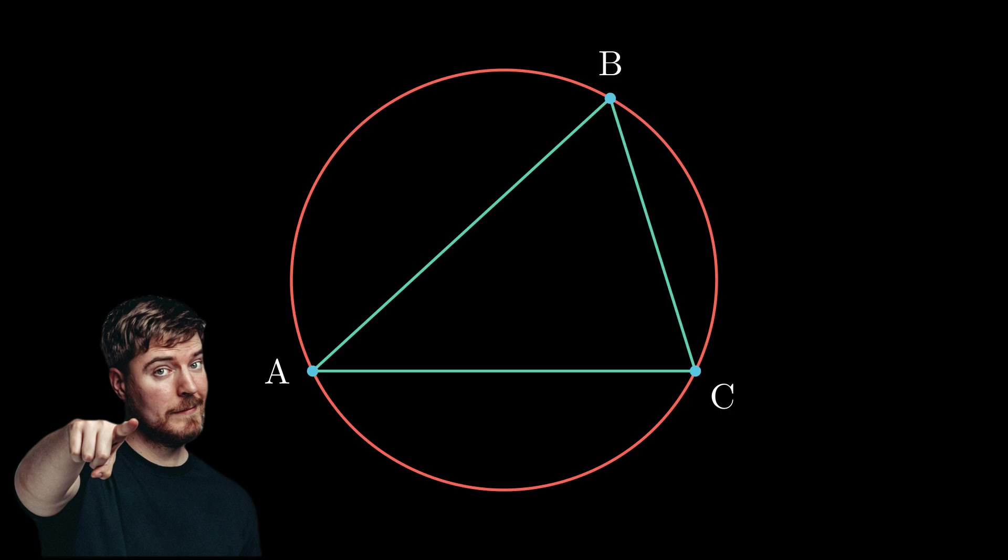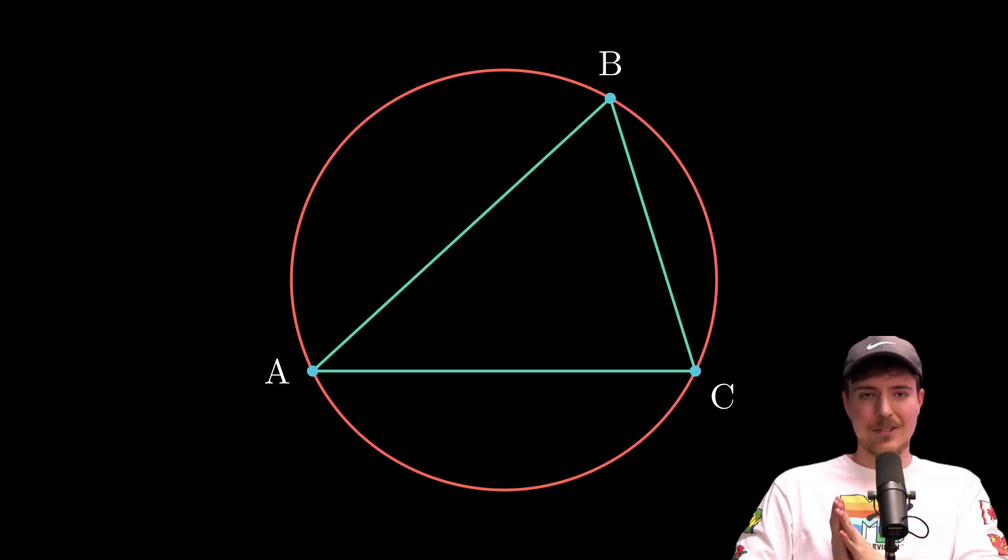Imagine we've got this triangle. Let's call it ABC, and we're doing something pretty cool with it. We're looking at its circumcircle. That's the circle that perfectly goes around the triangle. Now picture this. We draw tangents to this circumcircle at points B and C, and they intersect at this point T. It's like setting up for a mind-blowing stunt, but with math.